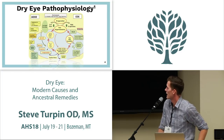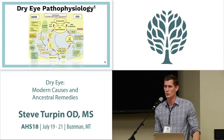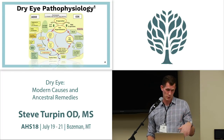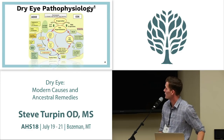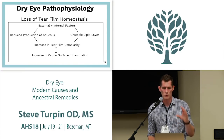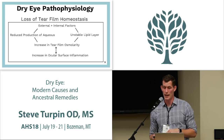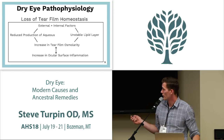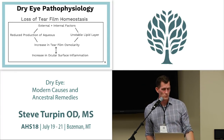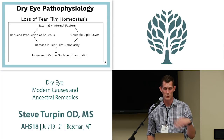There's a group called TFOS — the Tear Film and Ocular Surface Society — that spends millions of dollars every year developing reports and schematics. If you distill their thousands of pages down, the first hundred pages basically tell us that the loss of tear film homeostasis is the cause of dry eye. That's really all you need to know.